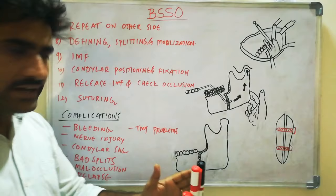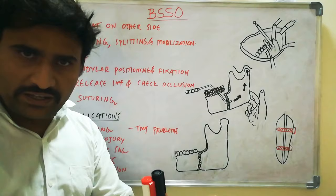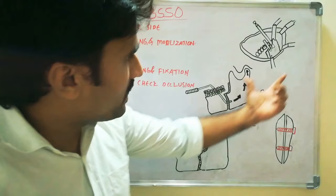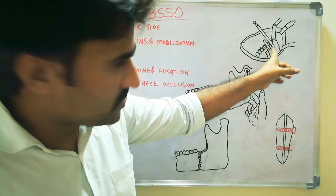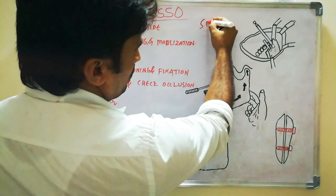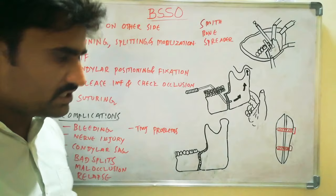Once the procedure is completed on one side, repeat the exact procedure on the opposite side. After defining the osteotomy cuts, splitting begins by tapping an osteotome placed in the sagittal osteotomy. You can also use a Smith's bone spreader — a specialized instrument used to split the mandible in BSSO. After splitting, mobilize the bone fragments.